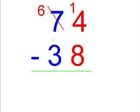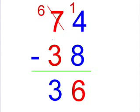Now we can subtract. 14 take away 8 is 6. Now we can do the 10s column. 6 take away 3 equals 3. So in the end, our answer was 36.